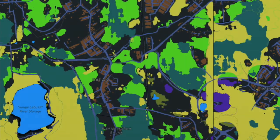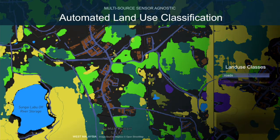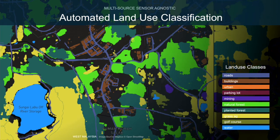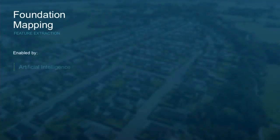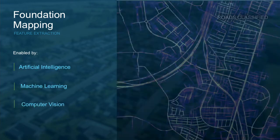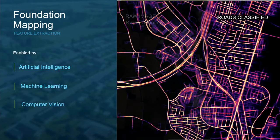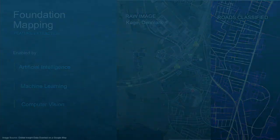Land use classification — we're taking anything from 30-meter Landsat imagery down to 3-meter Planet imagery and automating classification of land use: forests, buildings, roads. That helps with foundation management and feature extraction, being able to provide point clouds of roads and buildings at global scale if required.